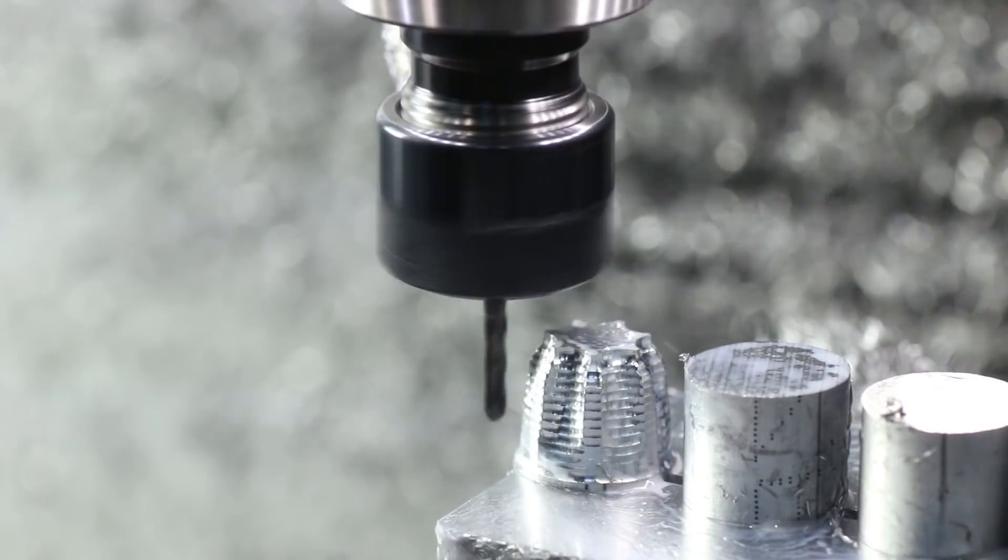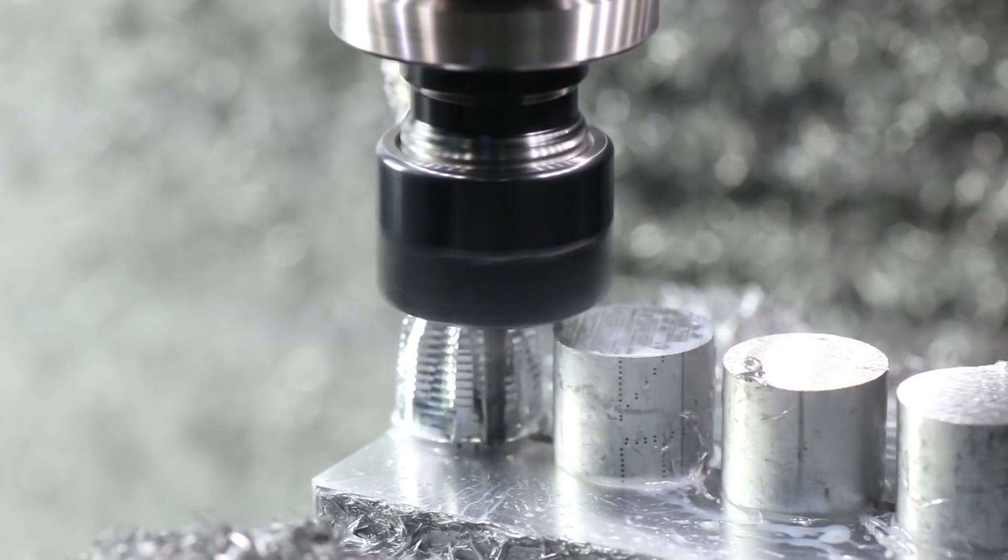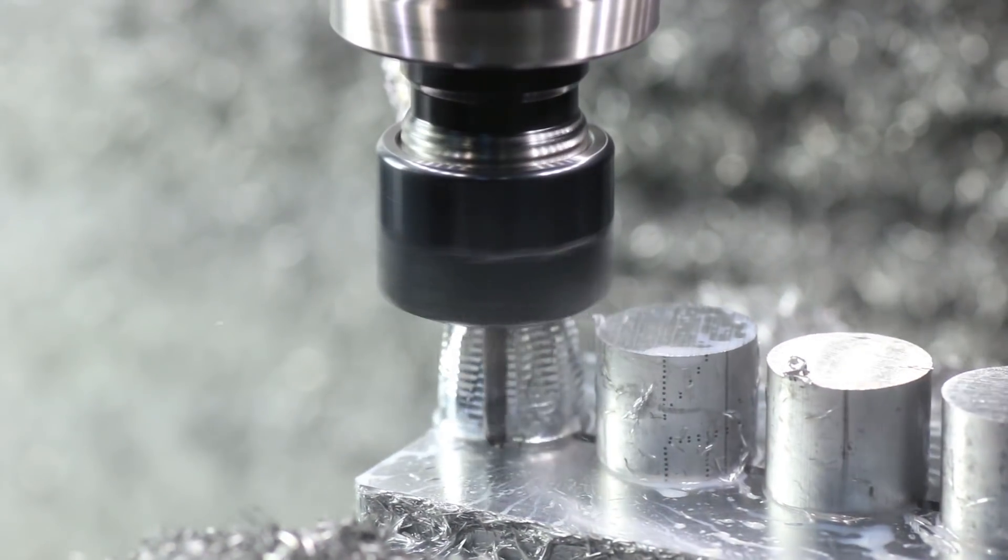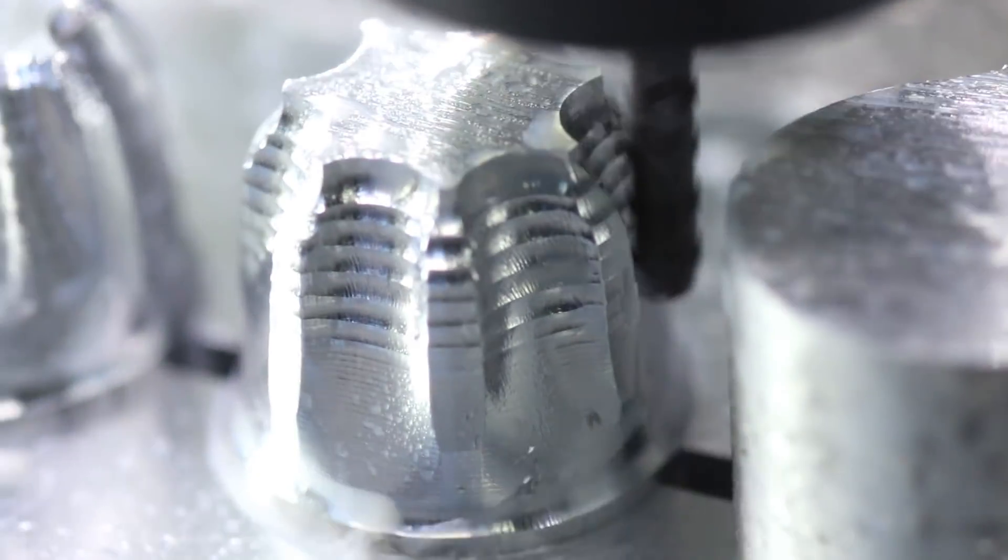This really keeps the tool load consistent on your finishing passes which is one of the tricks to getting a nice surface finish. We cut all this with about 2 thou stock to leave and then we did 10,000 rpm at 45 inches a minute.